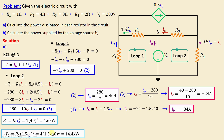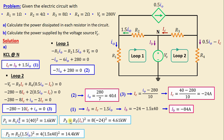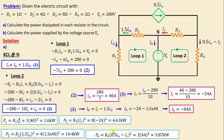The dissipated power in R3 = R3 × IC² = 4.61 kW. The dissipated power in R4 = R4 × (0.5·IO − IC)² = 3.87 kW.